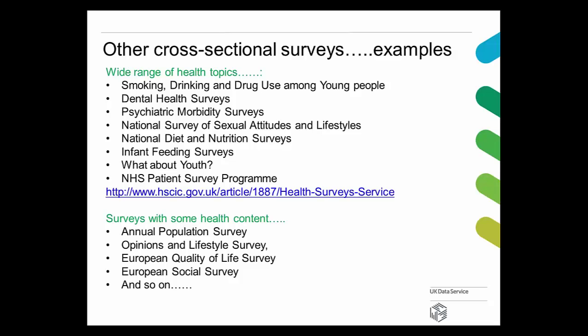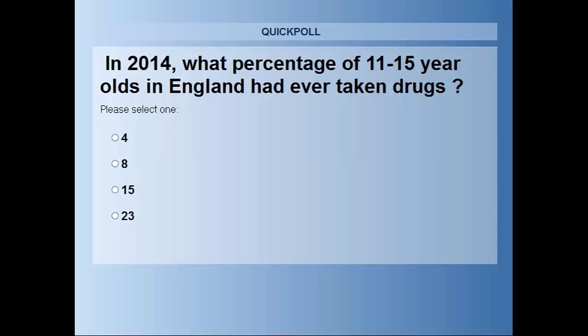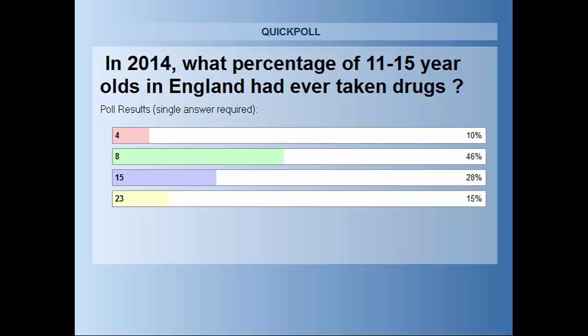I'm going to do another poll. This one takes data from the Survey of Smoking, Drinking and Drug Use Among Young People in England: what percentage of 11 to 15 year olds in England have ever taken drugs, from 2014? The correct answer is 15%. Most people thought it was 8%. It's quite terrifying if you have children in that age range. The correct answer is 15% — 16% were boys, 13% were girls. The good news is that it's dropped hugely from 2001 when it was first measured at 29%, so something is obviously working.